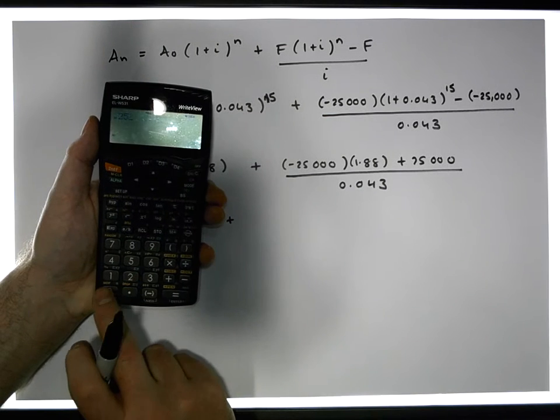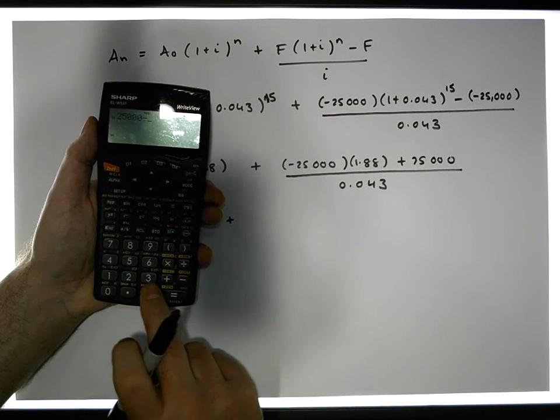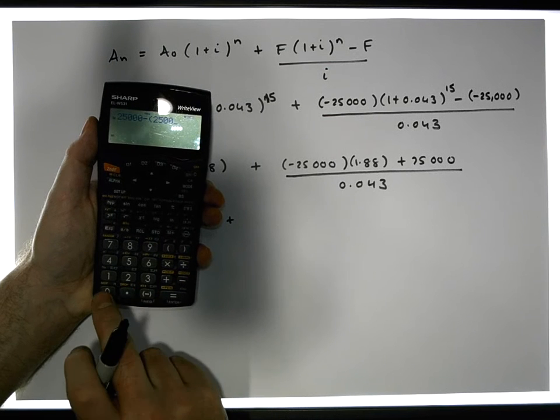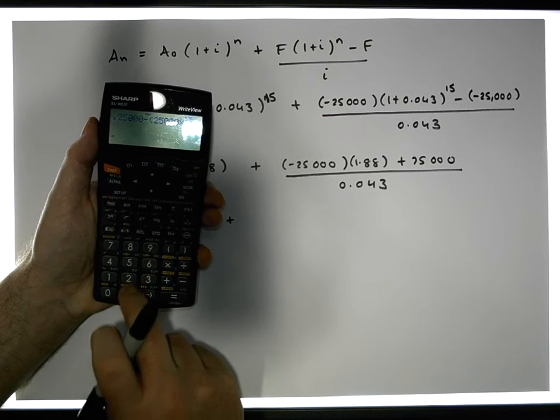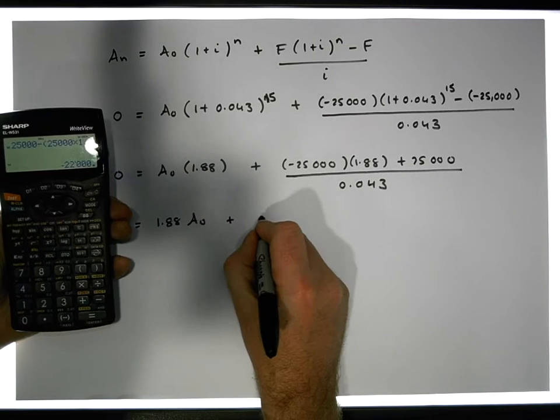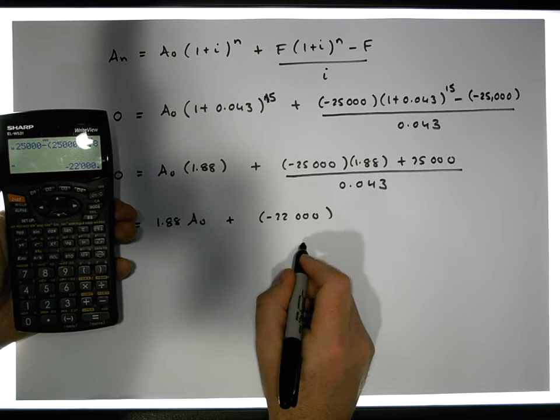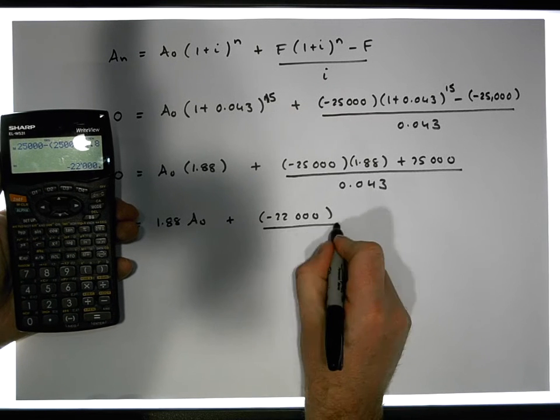Minus, because that's minus times positive, minus 25,000 euros times 1.88, which gives us a value of minus 22,000 euros, and that's to be divided by 0.043.